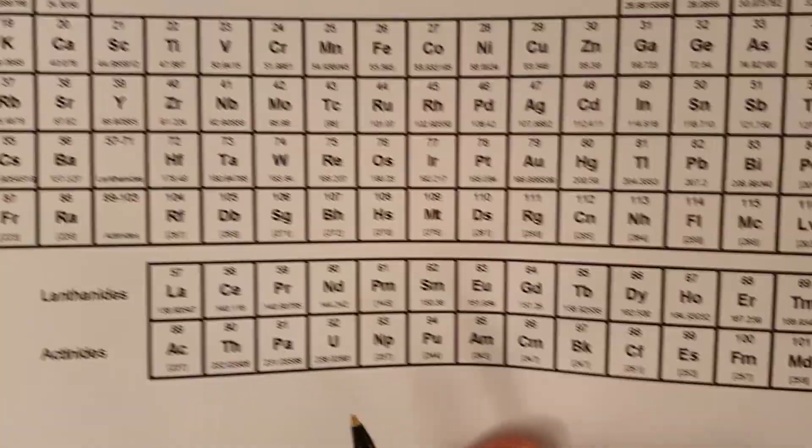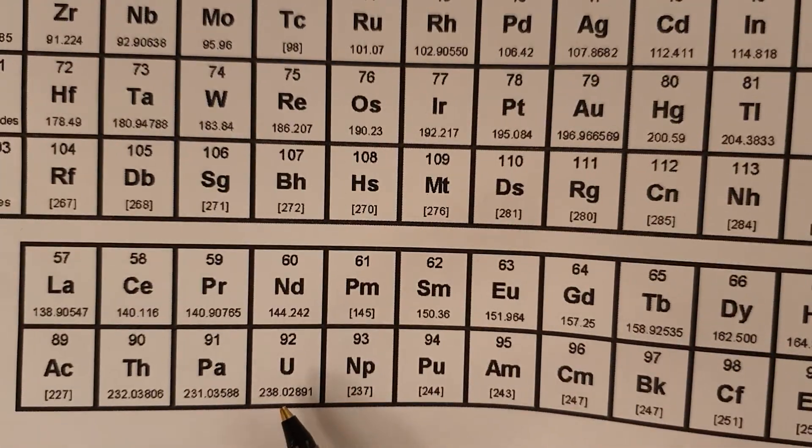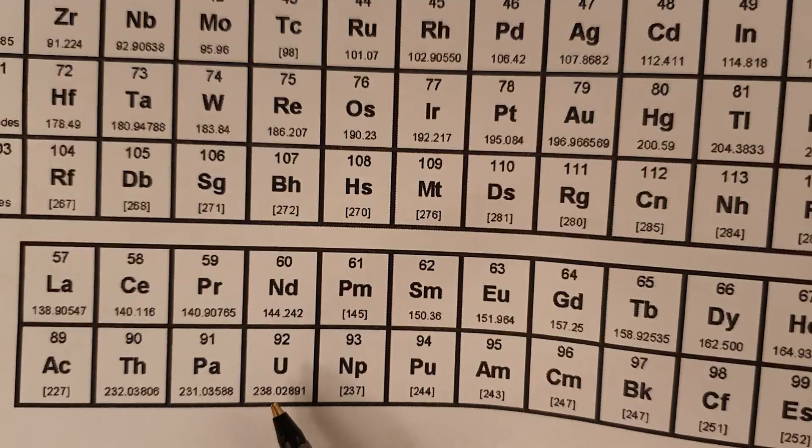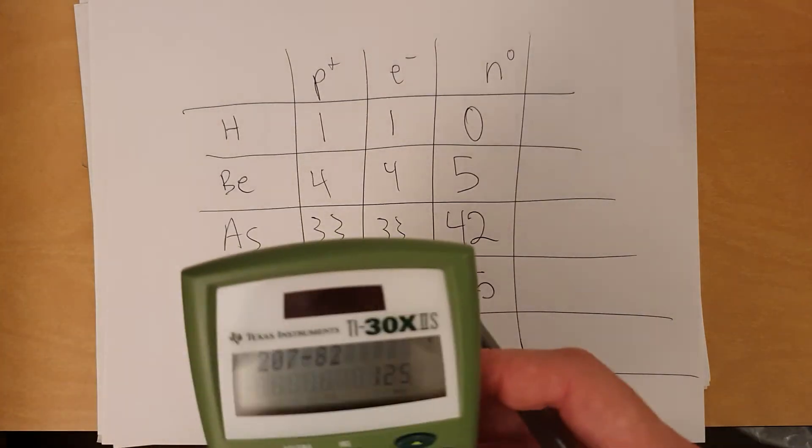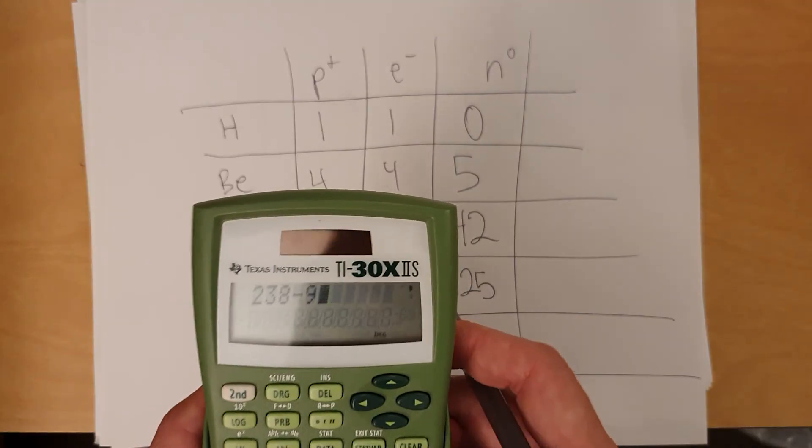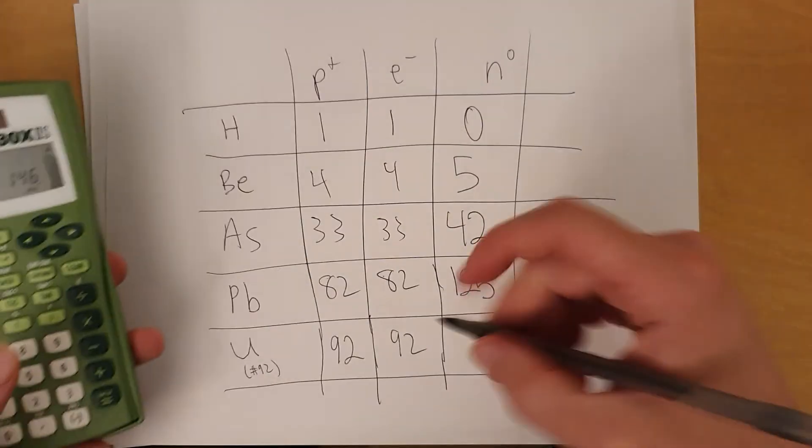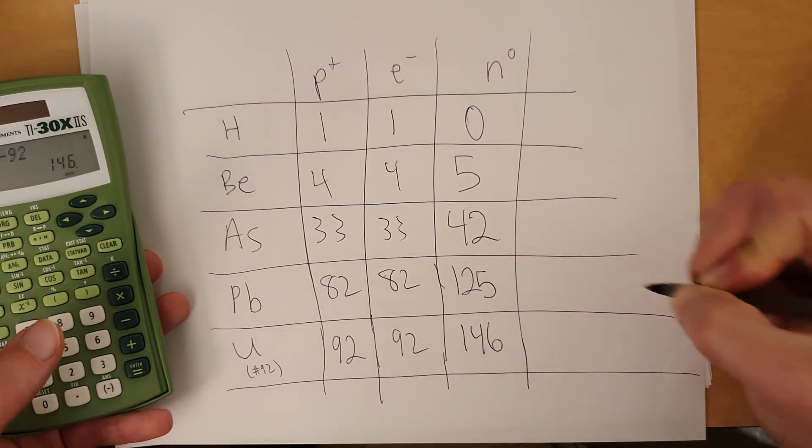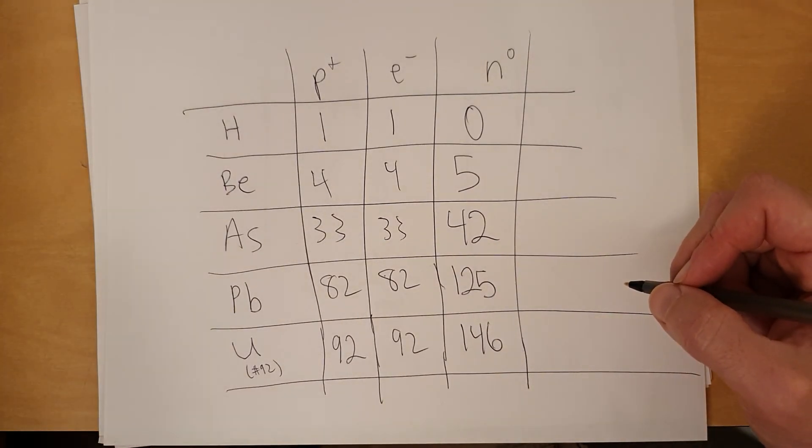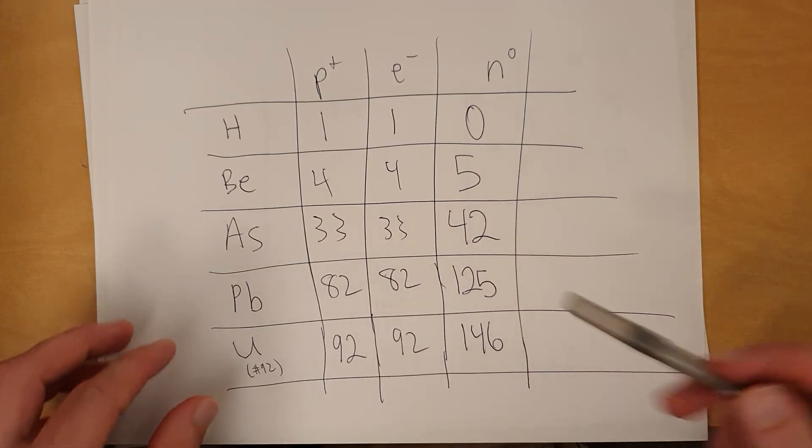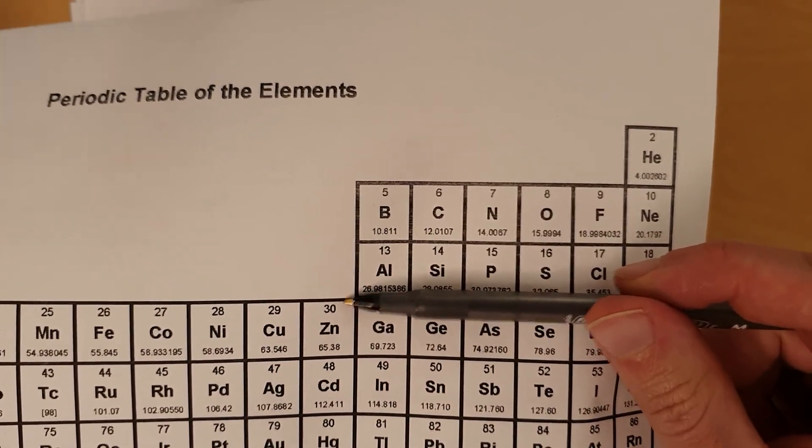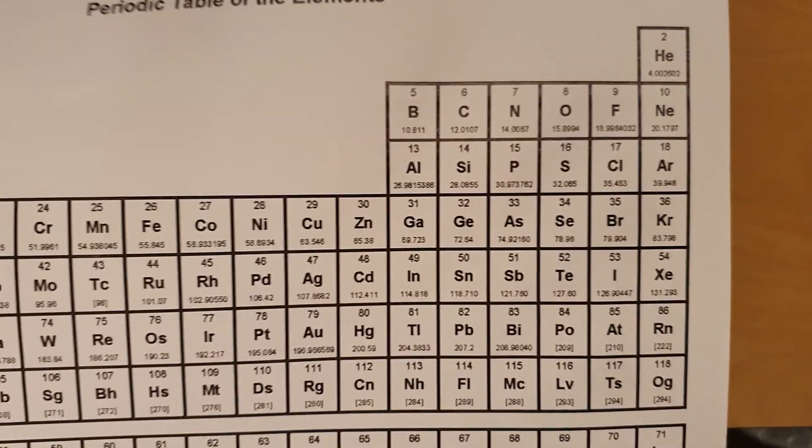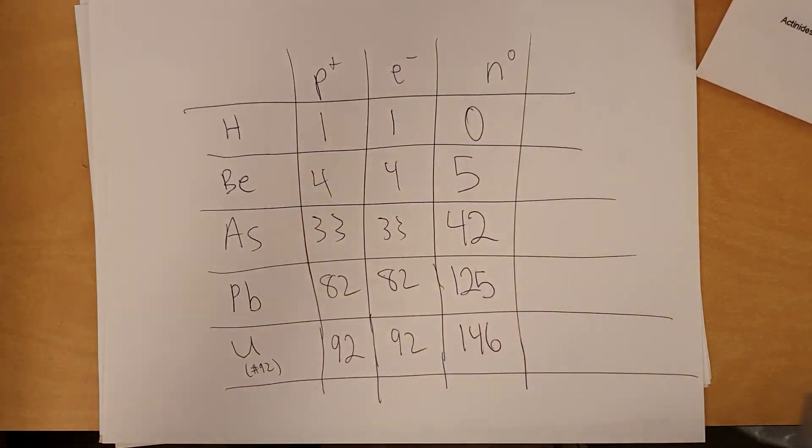Finally, uranium. There it is. Rounds to 238 when you round to the nearest whole number. So 238 minus 92, 238 minus 92 equals 146. Okay, that's how you do it. It's always just this minus this gives the number of neutrons for any element on the periodic table. And that's just how it works. Alright, there we have it.